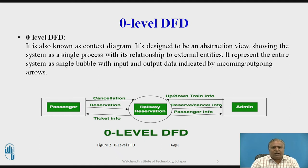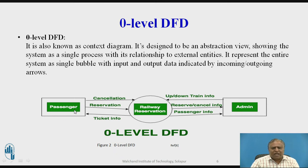Now we are going to see an example of a data flow diagram. This is the zero-level data flow diagram, also called the context diagram, of a reservation system. It is an abstract view showing the system as a single process with its relationship to external entities. It represents the entire system with a single bubble, with input and output indicated by incoming or outgoing arrows. The main system is railway reservation and the entities are the passenger and the administrator.